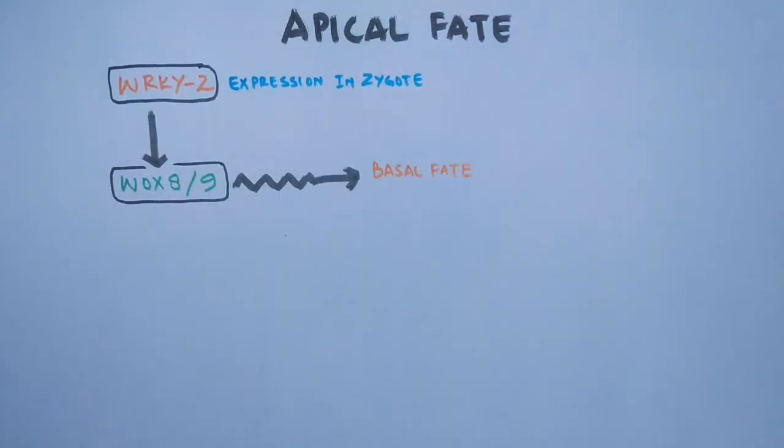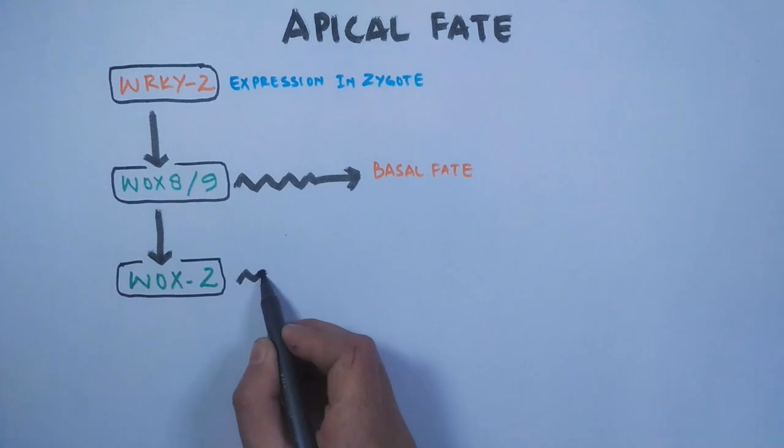But here we have to see how apical fate is driven. To determine the apical polarity, the WOX8/9 genes also activate WOX2 genes. This WOX2 expression leads to the apical polarity in the cells.